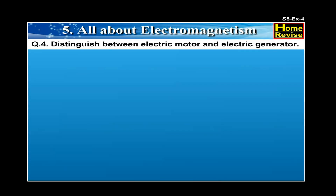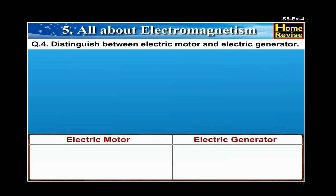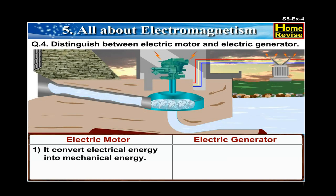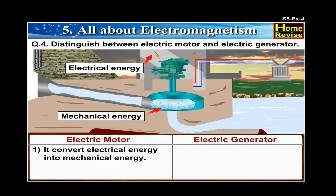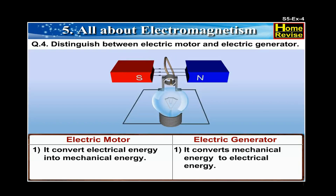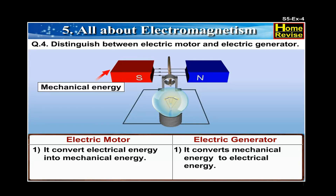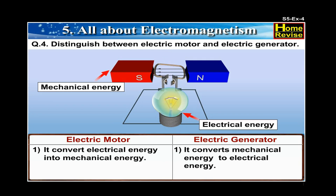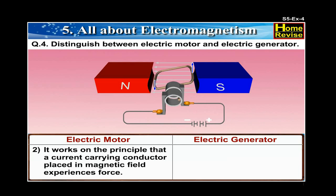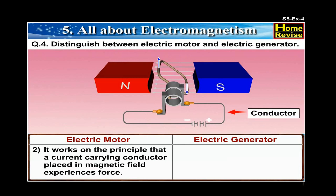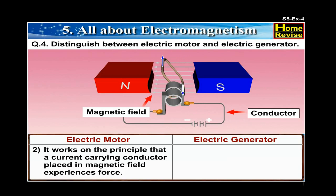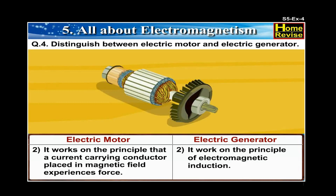Distinguish between electric motor and electric generator. Answer: 1. An electric motor converts electrical energy into mechanical energy, whereas an electric generator converts mechanical energy into electrical energy. 2. An electric motor works on the principle that a current-carrying conductor placed in a magnetic field experiences a force, while an electric generator works on the principle of electromagnetic induction.